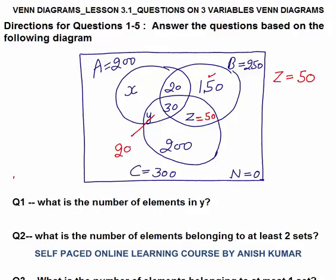Now the A circle should equal 200. If you add 20 plus 30 plus 50 plus 20, that is 120, so x should be 130 — then only this will become a total of 200. We have now completely filled this three variable Venn diagram. None is equal to 0. Now we can start solving the first question.